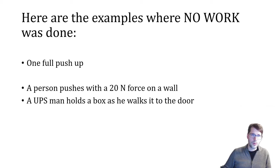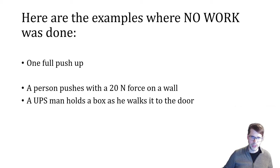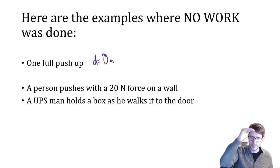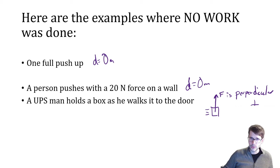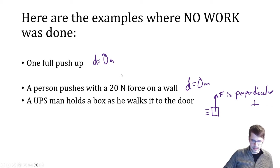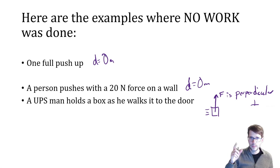Here are the ones where no work is done. For the push-up, you push yourself up and then go back down — you did positive work on the way up and negative work on the way back down, so the net displacement was zero because you got back to where you started. If you're pushing against a wall, the wall doesn't move, so you won't be doing any work on it. And for the UPS man, there's no work done because the force is perpendicular to the direction of motion — as the box is being carried sideways, the person applies an upwards force. This is a classic example you'll likely see on a quiz or test, like carrying a suitcase or a waiter's tray.